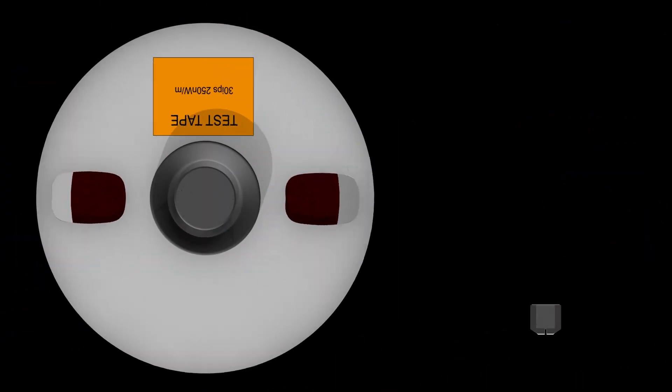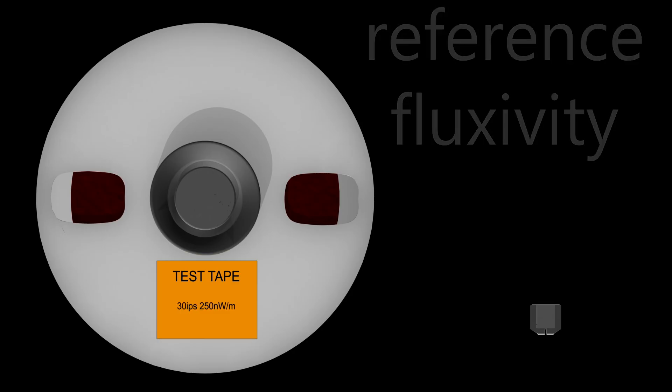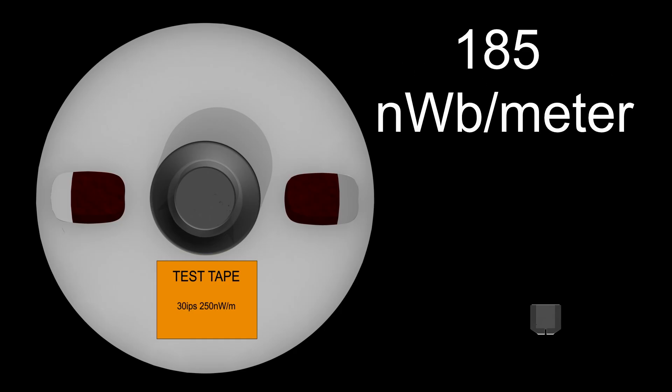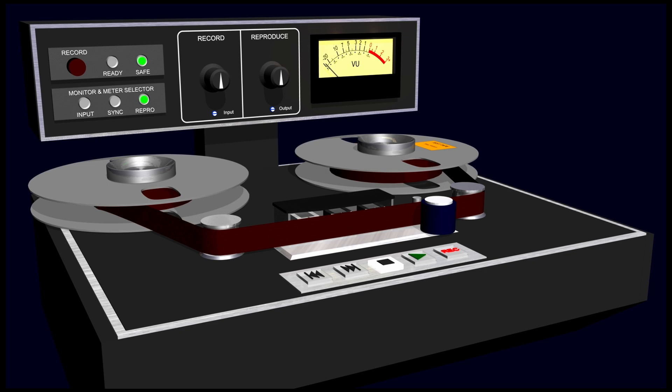Test tapes are recorded at calibrated magnetic levels. This is called reference fluxivity. The unit of measure of magnetic strength is nanowebers per meter. The original standard for test tapes was 185 nanowebers per meter at 700 cycles. Aligning at this level was relatively simple. You set your playback level to read 0 VU from your test tape.